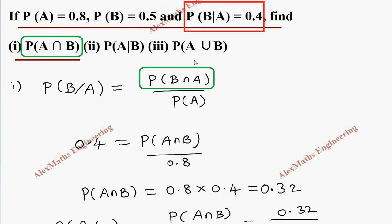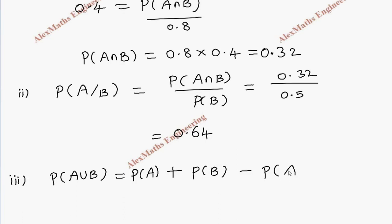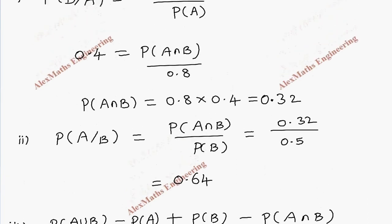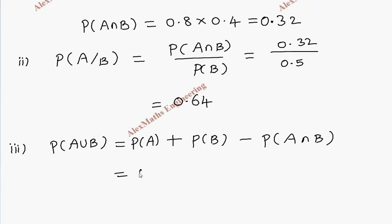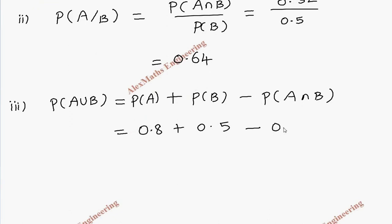In the third subdivision, they want P of A union B. The formula is P of A union B equals P of A plus P of B minus P of A intersection B. Taking values from the question: P of A is 0.8, P of B is 0.5, and P of A intersection B is 0.32 from the first subdivision. After simplification, we get 0.98.